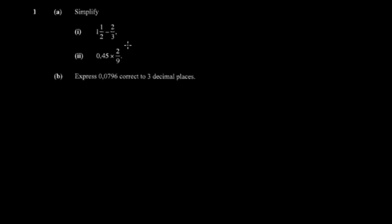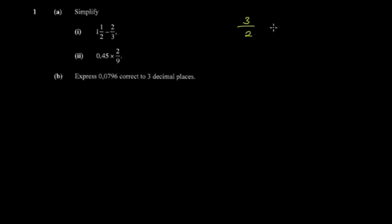Whenever you're simplifying, whether it's addition or subtraction of fractions, it's always good to have your values as improper fractions. You want to avoid mixed fractions — there is a way to work with them, but it's not advisable. This method is more universal. So what you do is: one times two (the denominator) gives two, plus the numerator three, so you get three over two.